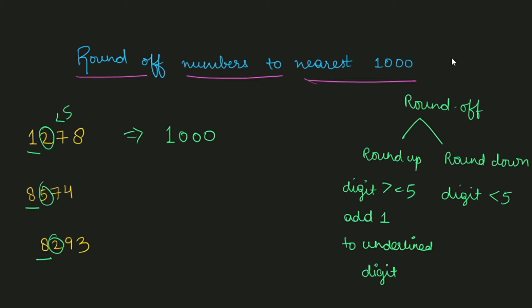The next number is 8574. The digit on the thousands place is 8. The next smallest place value is hundreds, and the digit on the hundreds place is 5. We compare 5 to 5 — 5 is equal to 5, so in both cases of equal to or bigger than 5 we do round up. So we add 1 to the underlined digit 8, getting 9, and all digits after become 0.